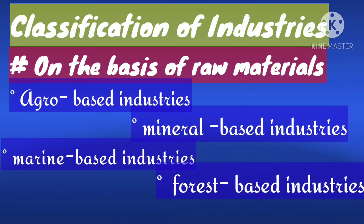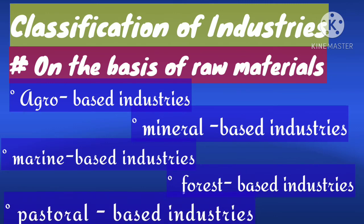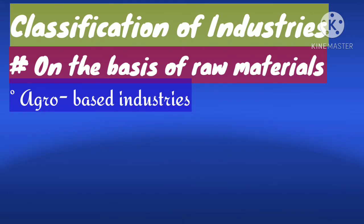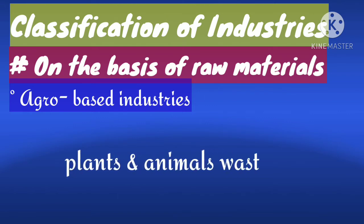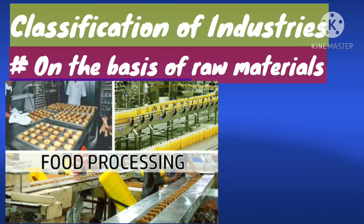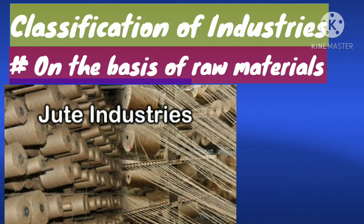The first category is agro-based industries. Agro-based industries use plant and animal-based products as raw materials. Examples include food processing, cotton textile, jute textile, and vegetable oils.